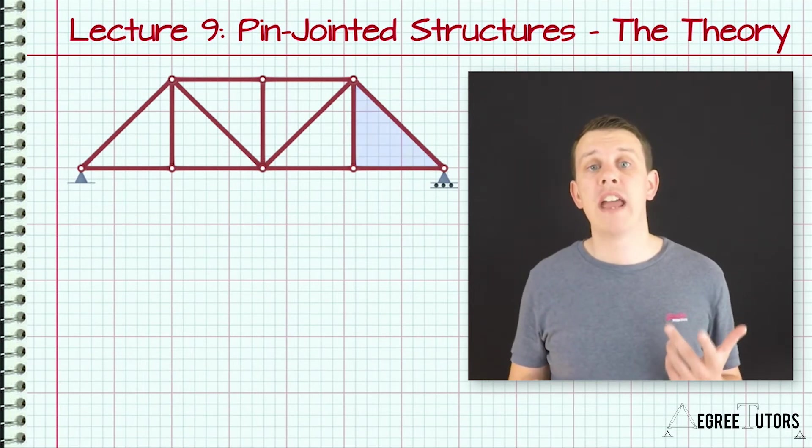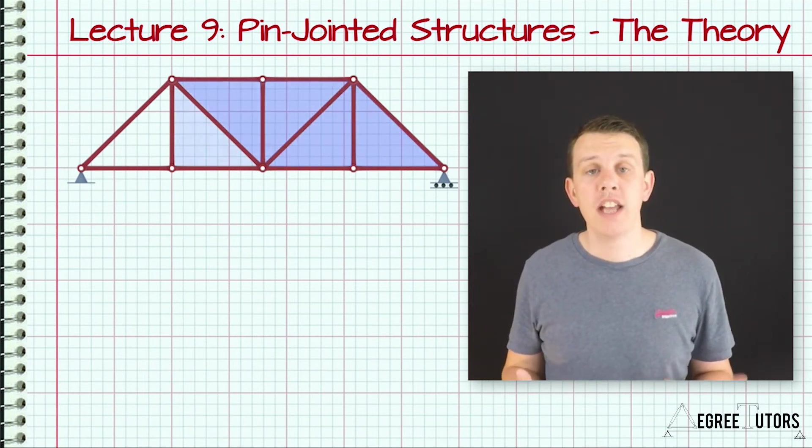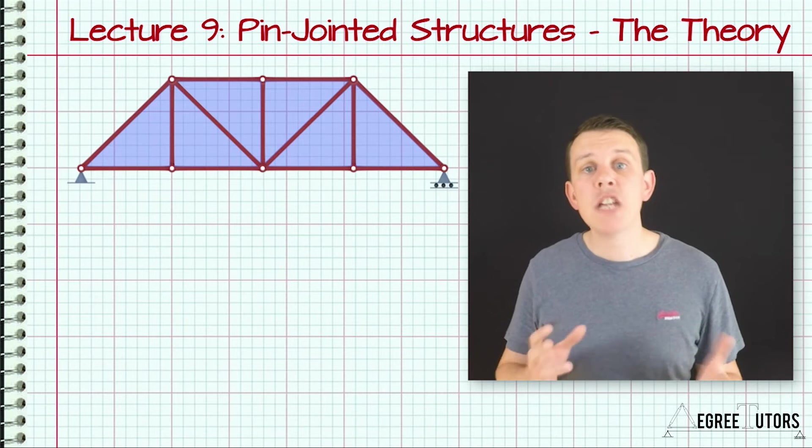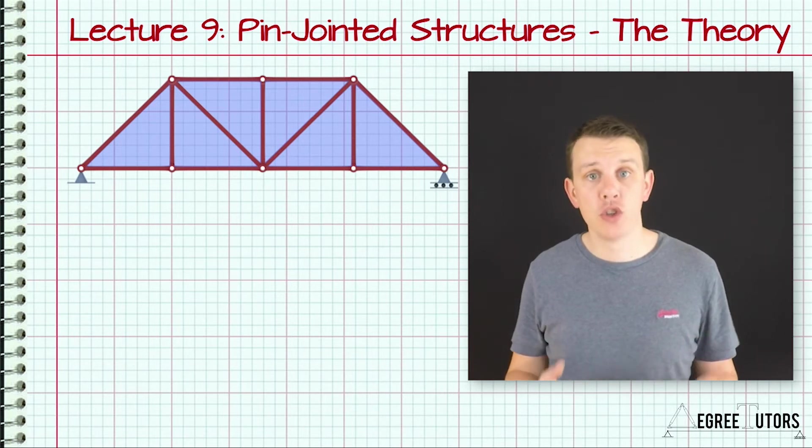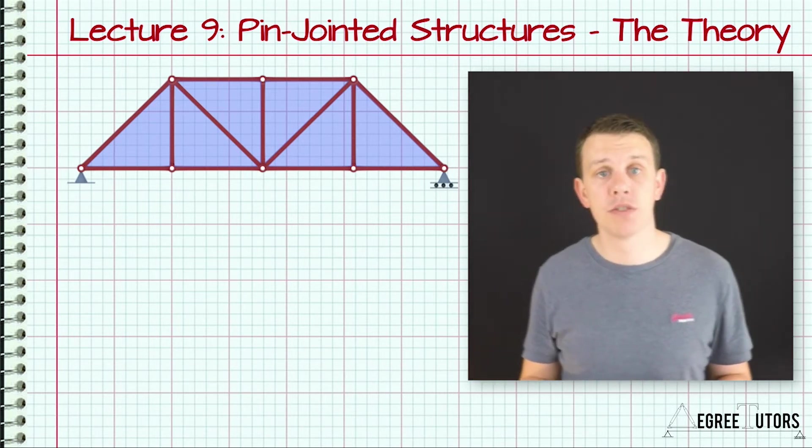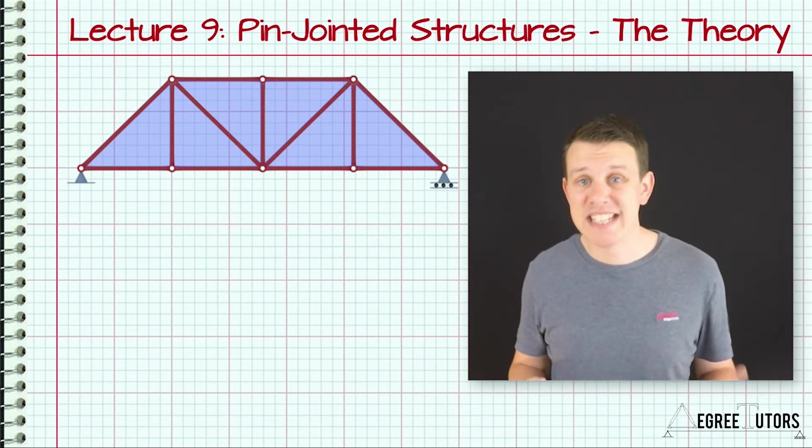You'll probably have noticed that trusses are arranged in a triangular form. This is because with this arrangement of members, every node or joint within the structure is held in place vertically and horizontally by the members that connect into it.